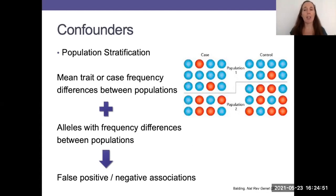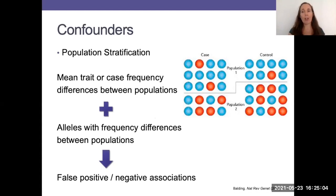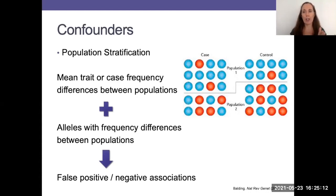The same thing can happen in continuous traits, but it's about where the mean is in that continuous trait. One of the ways that we try to account for population structure and therefore population stratification in our data is by including principal components in our regression models as control variables.